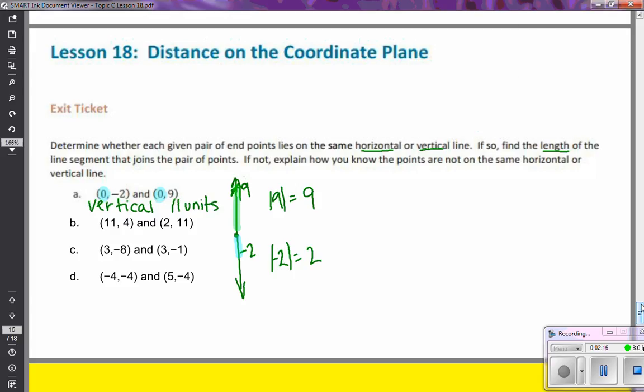So the next one, I have (11, 4) and (2, 11). The first thing I'm going to do is look at my coordinates. And here, the x-coordinates, one's an 11, one's a 2. So that's not the same. Now I'm going to look at my y-coordinate. There's a 4 and 11.